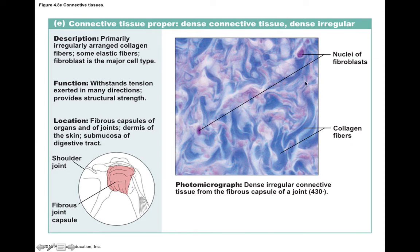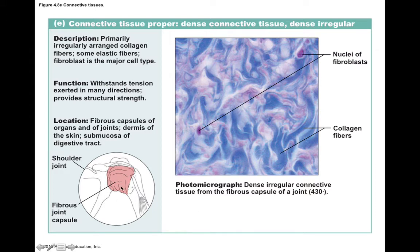Dense irregular connective tissue has fibers arranged in a more irregular pattern. Like dense regular, it is strong, but it resists tension in many different directions. This allows it to provide structural strength in fibrous joint capsules, organs and joints, the dermis of the skin, and the submucosa of the digestive tract — all locations that experience stress in many different directions. For example, the fibrous capsule of the shoulder experiences stress in many directions as you move your arm, and the same applies to skin and the digestive tract.